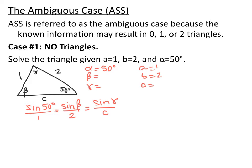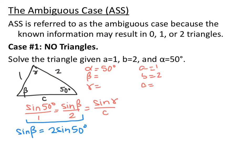This ratio has one known and one unknown, so we'll solve for that one. We can't use gamma or c since both are unknown. So we set up sine of 50 degrees over 1 equal to sine of beta over 2, meaning sine of beta equals 2 times the sine of 50 degrees. This is your first test point — pause the video and plug 2 times sine of 50 degrees into your calculator.